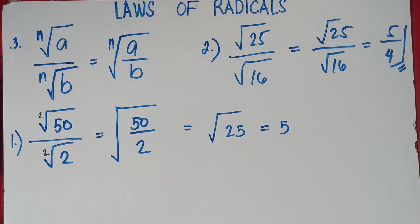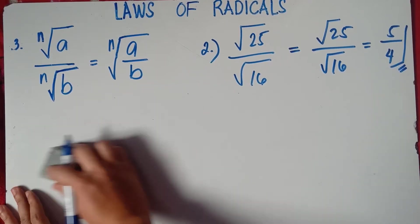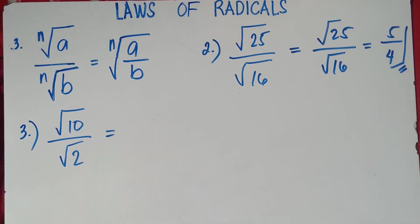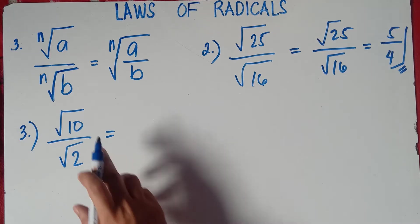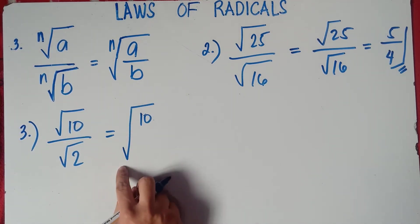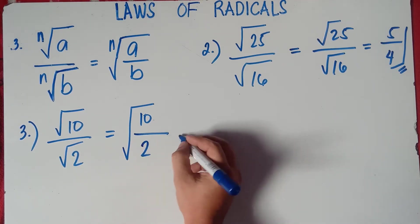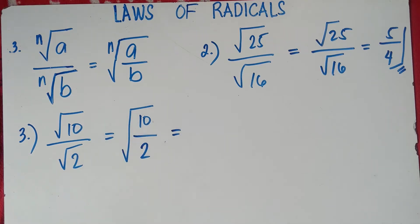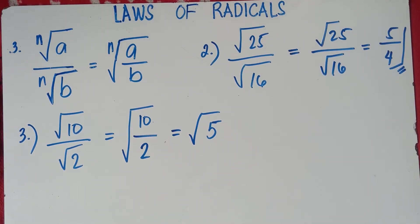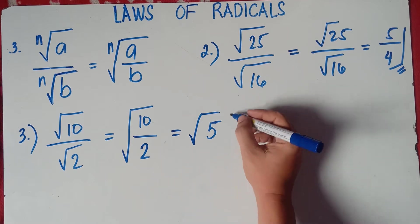Example number 3: the square root of 10 over the square root of 2. Can we divide 10 by 2? Yes, we can. So they have the same index — just write one square root of 10 over 2. Since 10 divided by 2 is 5, this becomes the square root of 5. Do we have the square root of 5? No — 1×1=1, 2×2=4, 3×3=9 — there's no whole number that gives 5 when multiplied by itself. So the square root of 5 is our final answer.